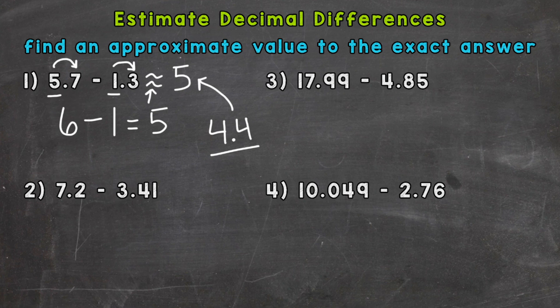On to number two, where we have 7.2 minus 3.41. So again, let's round to the nearest whole number for both of these. 7.2 rounds to 7, minus 3.41 rounds to 3. So we can do 7 minus 3 is 4, and that is going to be our estimate.